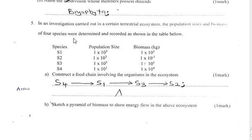Question 5: In an investigation in a terrestrial ecosystem, the population sizes and biomass of four species S1, S2, S3, S4 were recorded. To construct a food chain, we base it on biomass as it is more accurate than population size. The organism with the highest biomass is S4, followed by S1, then S3, then S2. This means S4 is the producer (green plant), and the arrow must point to the consumer.